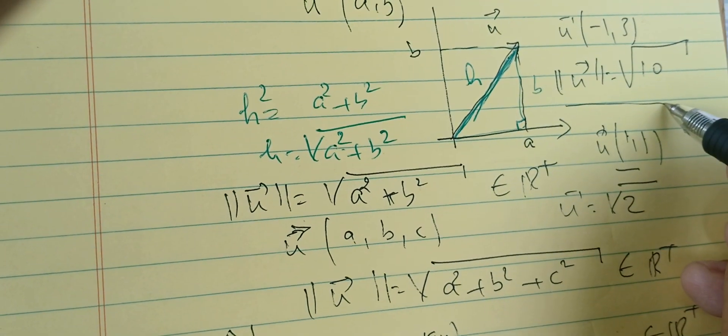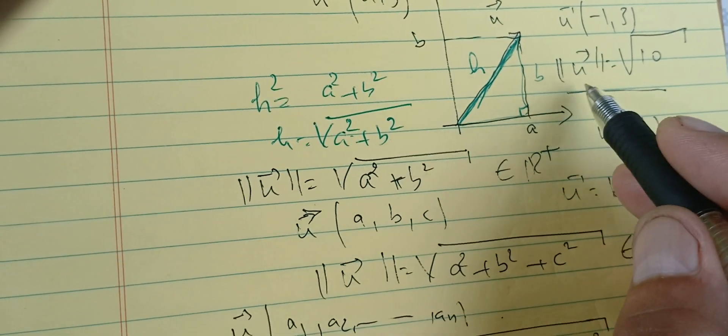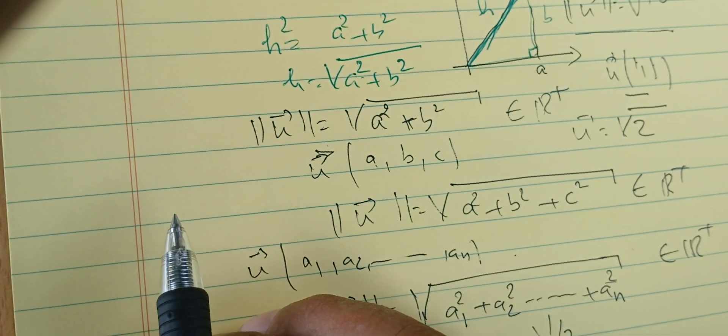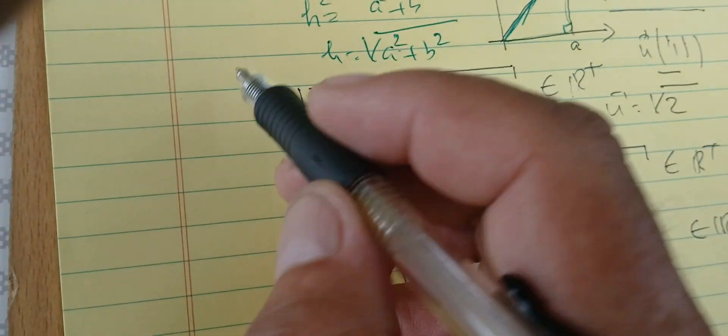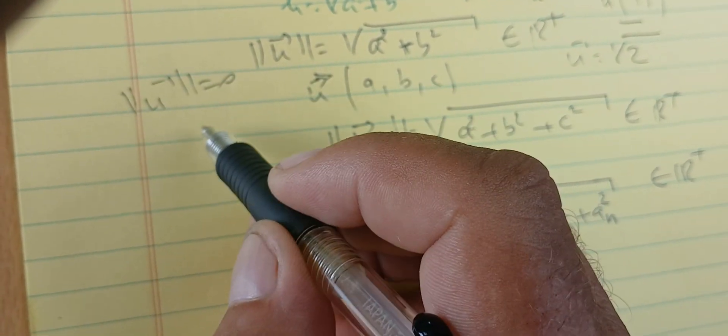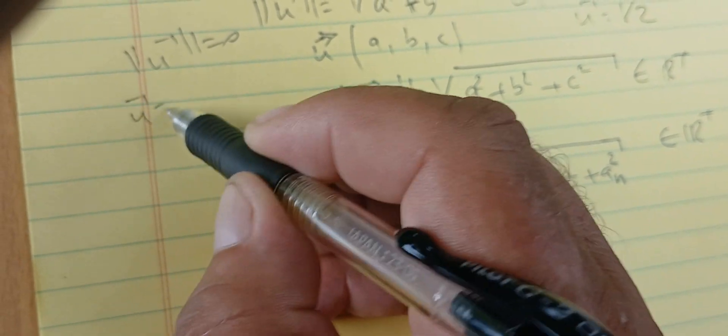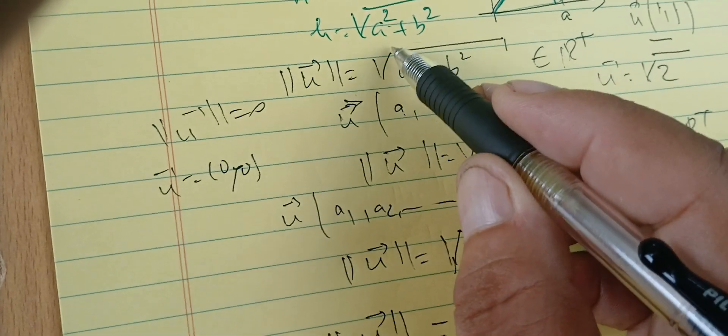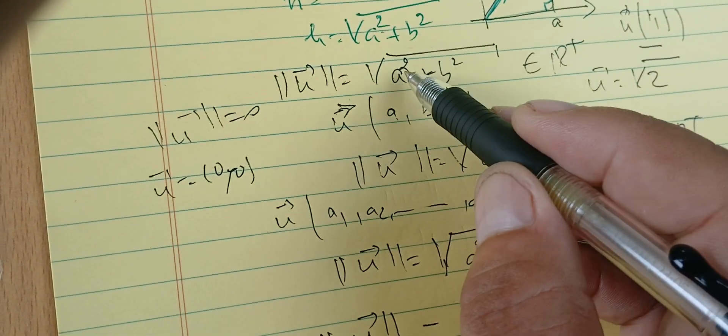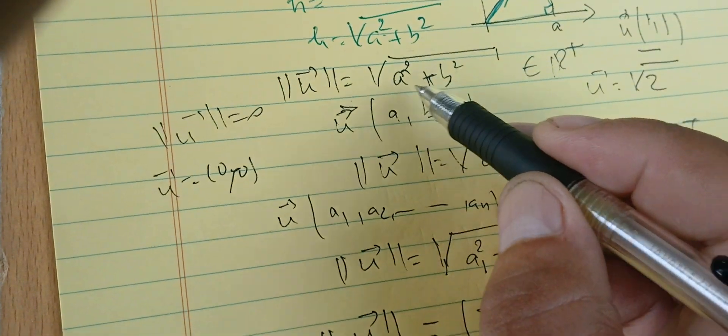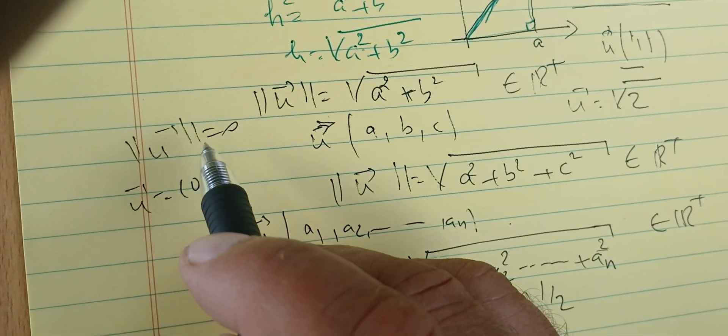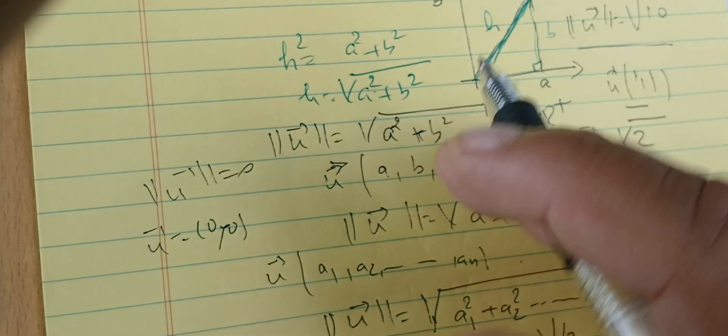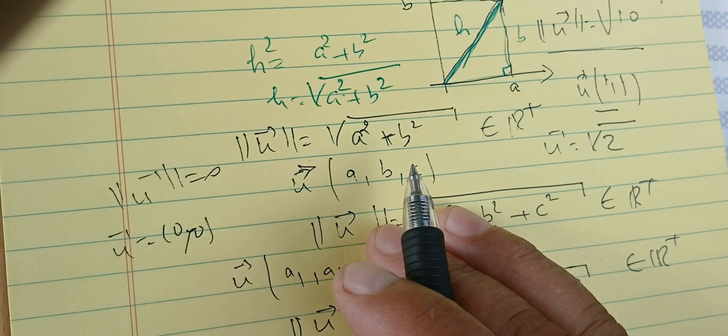The only case when the norm is zero is when all its coordinates are zero. We can prove it directly: the norm is zero if u = (0, 0, ..., 0). If the norm equals zero, that means all components are zero. So the norm of a vector is zero if and only if all its components are zero.